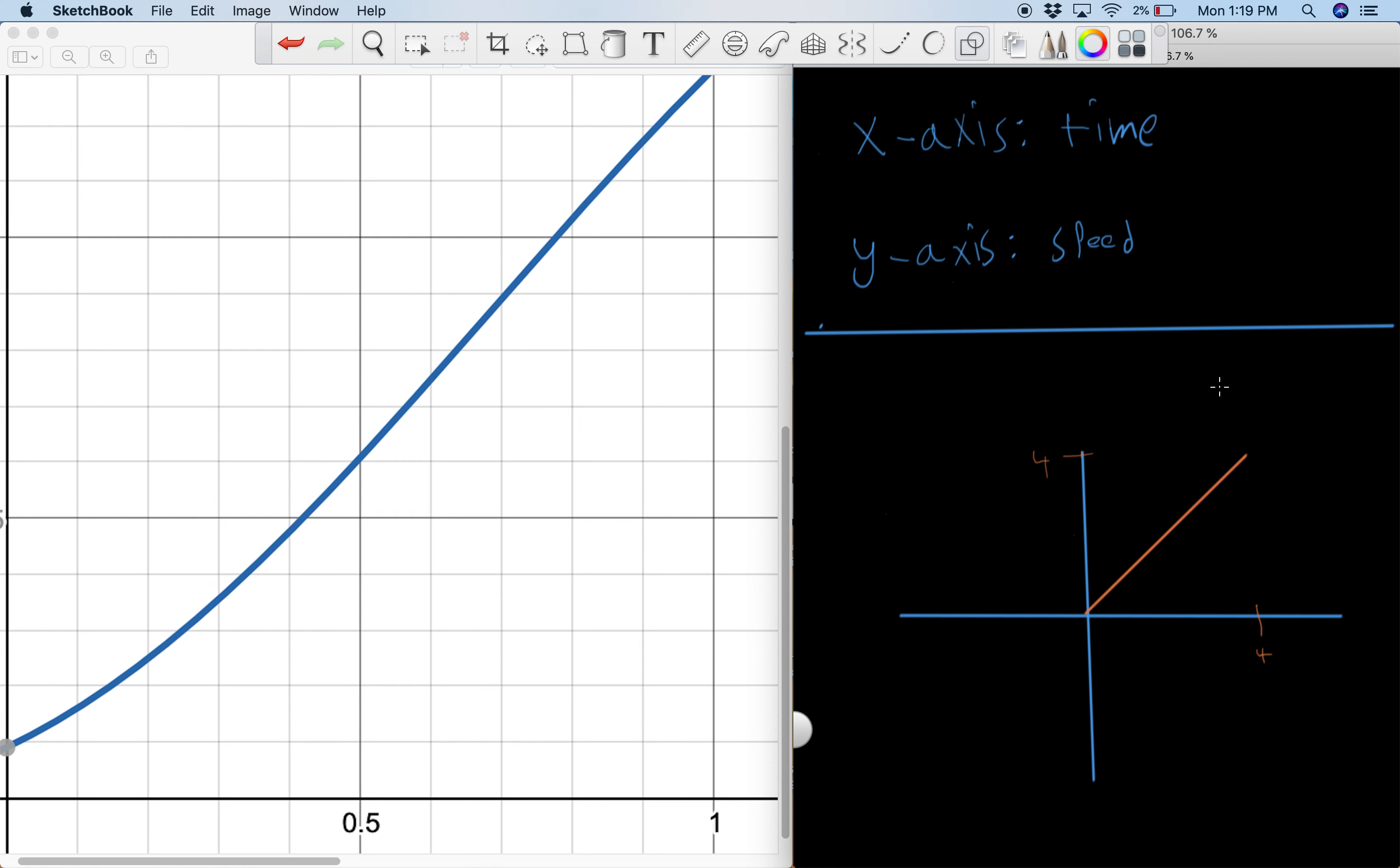And we want to take the integral of this line. Well, what does that mean? What that means is we get the area under this curve. So the area under this line, right here, this is the area under this line. And notice that this is just a triangle, right, if you want to take the area up until x equals 4.